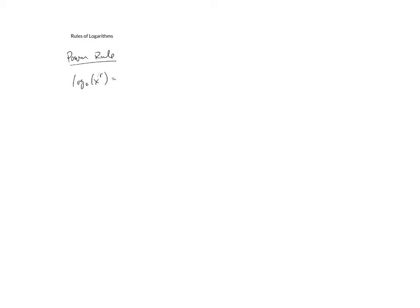So the three rules of logarithms that we're going to talk about — we'll start with the power rule. The power rule says that if you have log base a of x raised to the r, then this r can actually be brought down in front to say r times log base a of x. We're assuming the correct domains — for example, x would need to be bigger than zero. So there's the power rule: you can take the exponent and bring it down in front.